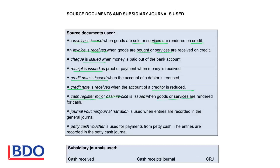A journal voucher or journal narration is used when entries are recorded in the general journal. Any entry that doesn't fit into one of the other categories will be recorded in the general journal. We don't receive a source document for this transaction, therefore we write a journal narration or issue journal vouchers as proof for the transaction.